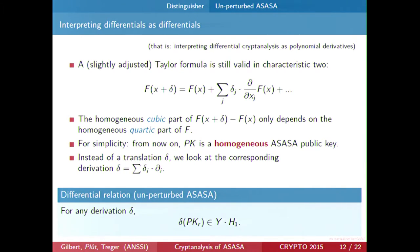The Taylor formula gives that f(x + delta) is related to f(x) plus the first-degree term. The cubic part of f(x + delta) minus f(x) is the derivative of f, and the derivative of degree 3 comes from the homogeneous degree 4 part of f. So to obtain the cubic terms in the output, we need to look only at the quartic terms of f. For simplicity, we now assume everything is homogeneous of maximum degrees and ignore all inhomogeneous terms until the last slide.